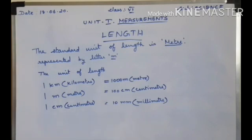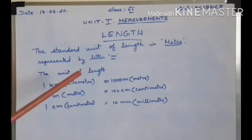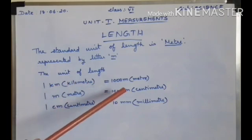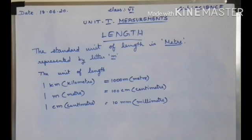Larger distances, like the distance between two cities, are measured in kilometers. In short, kilometer is written as km. 1 kilometer is equal to 1000 meters. We measure length in centimeters, meters, or kilometers depending upon how large the length or distance is.